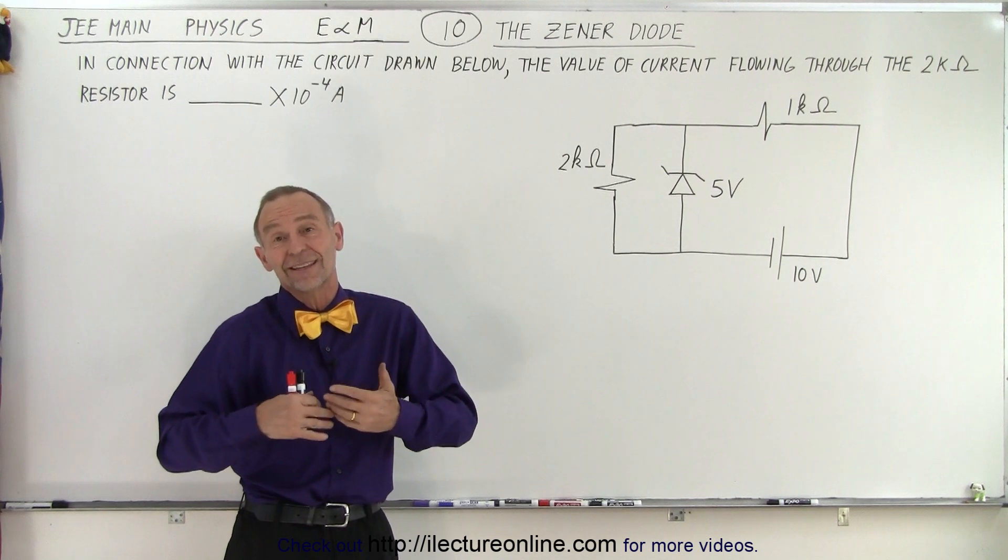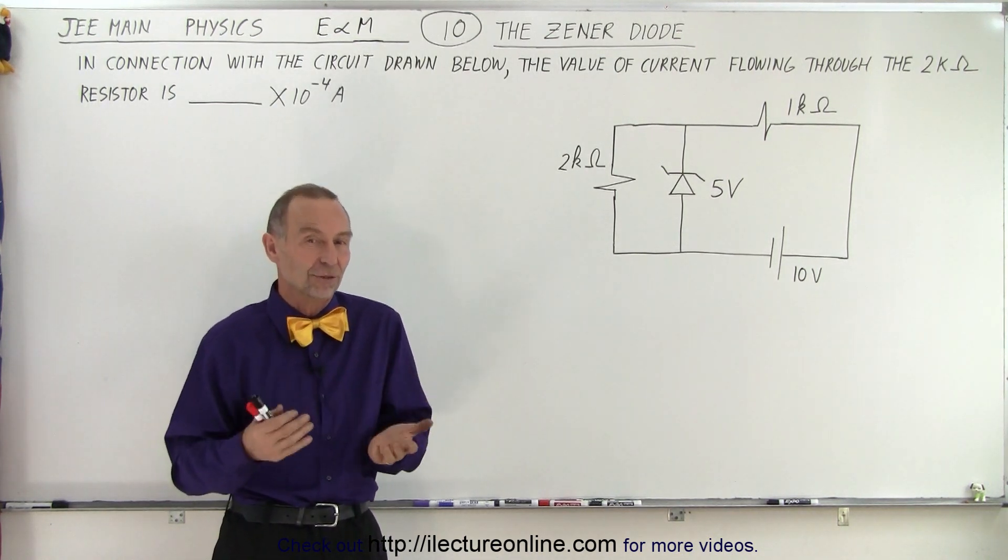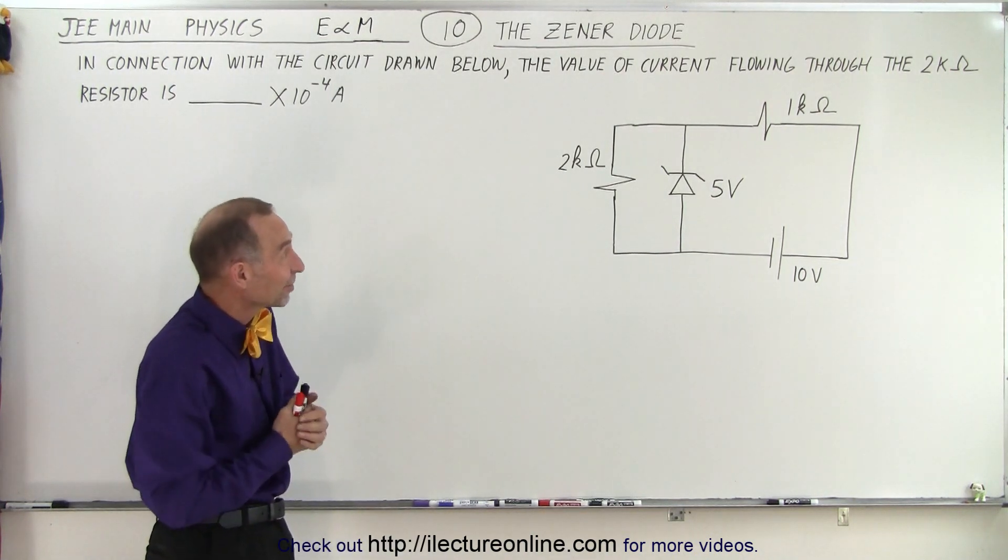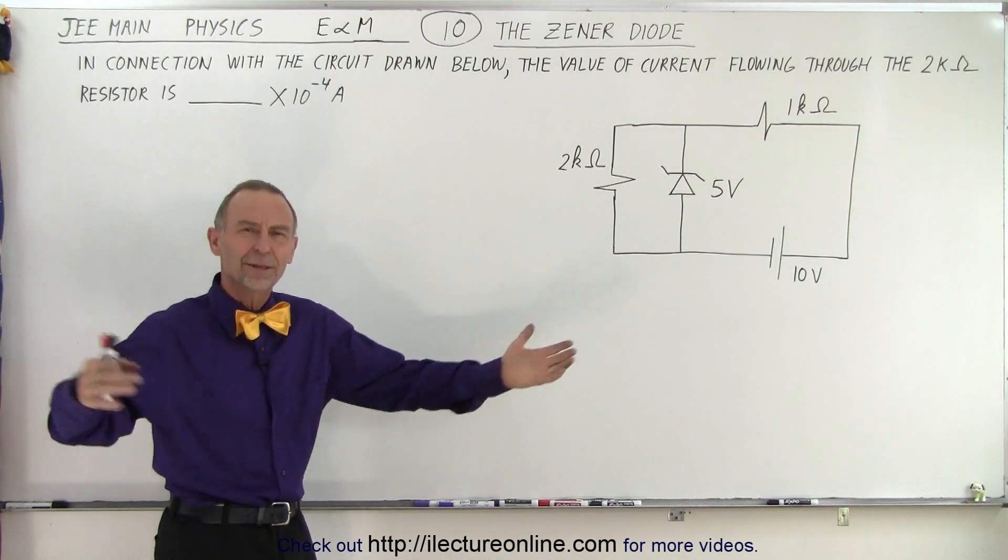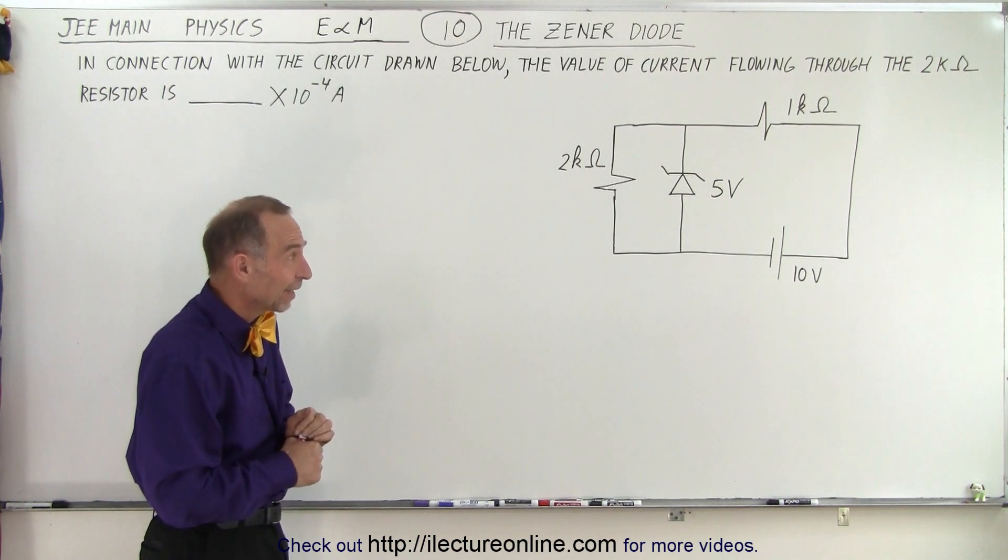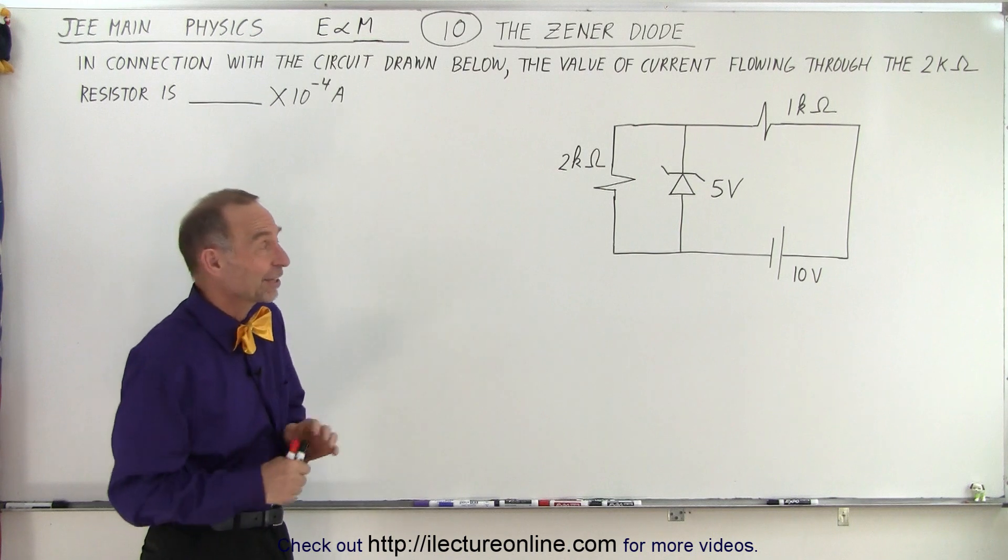A topic you typically don't see regularly in textbooks or may not even be covered in typical physics courses. Here we're dealing with the Zener diode. When you see Zener diodes in a typical physics class, that's usually a topic not covered very often, so you may not know what to do with it and just have to guess. Let's read the problem and see how we solve a question like this.